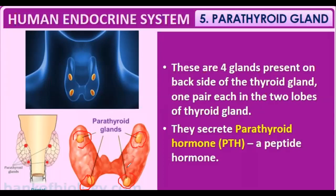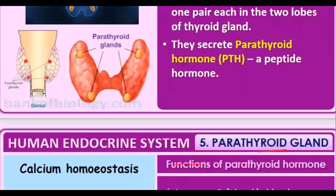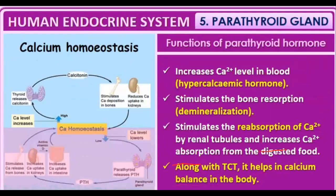Thyrocalcitonin lowers the amount of calcium in the blood, while the parathyroid hormone raises the amount of calcium in the blood. The parathyroid hormone is a peptide hormone — it is called a hypercalcemic hormone because it increases calcium levels in the blood.